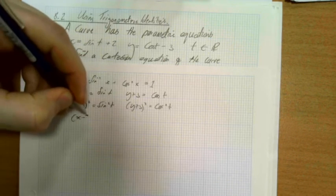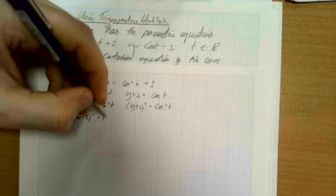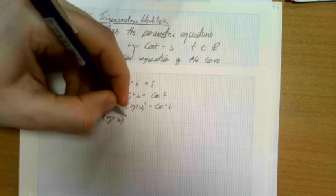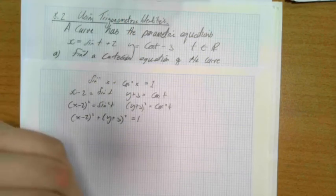And so (x minus 2) squared plus (y plus 3) squared is going to be equal to 1.